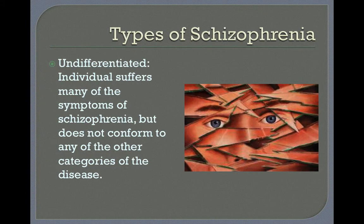Undifferentiated schizophrenics are individuals who may suffer the symptoms of schizophrenia, but their symptoms do not conform to any other categories of the disease.